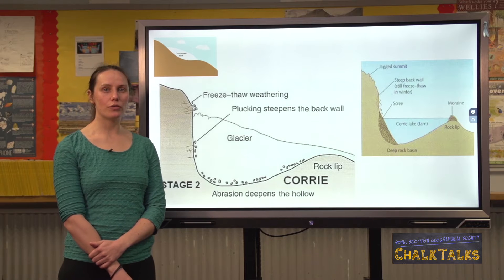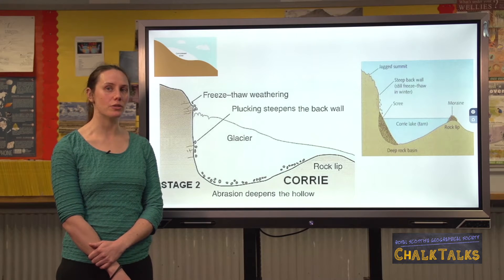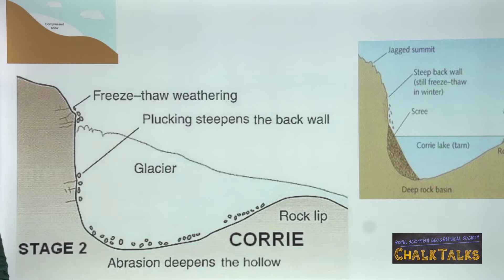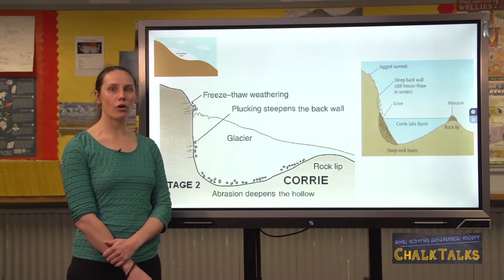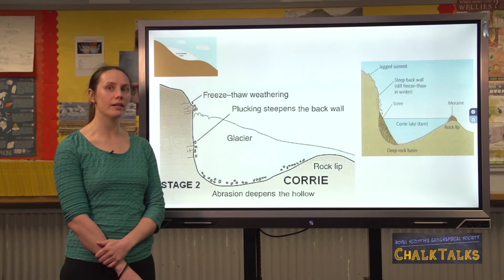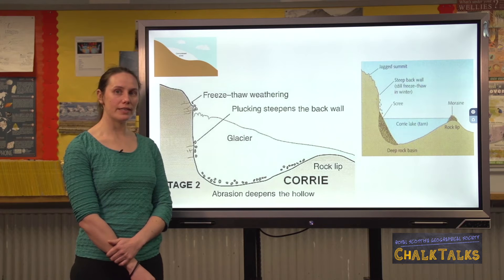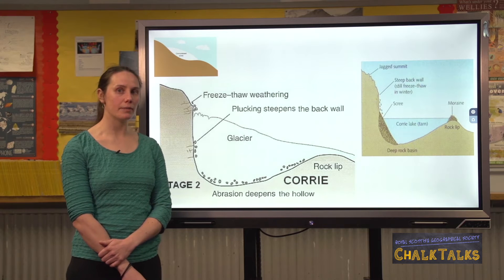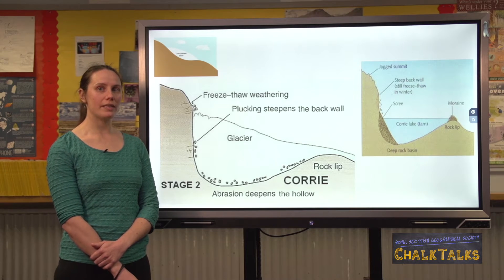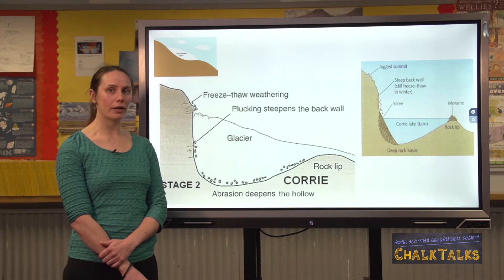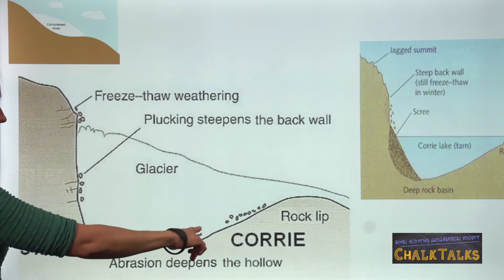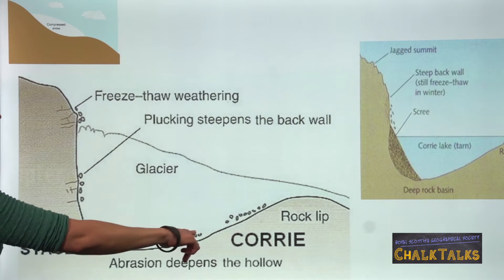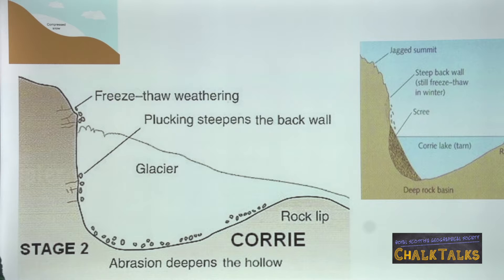Once the ice begins to move downhill under gravity it begins to enlarge the hollow into a corrie. Your explanation should focus on the processes it uses to do this. It uses plucking, especially on the back wall where the ice freezes onto the rock and pulls it out as it moves downhill, making the back wall very steep and jagged. The rock fragments taken off by plucking are then used to scrape along the bottom of the hollow, making it deeper and smoother — this process is known as abrasion.